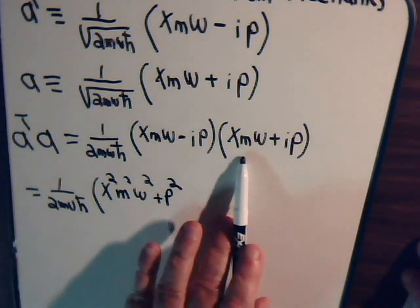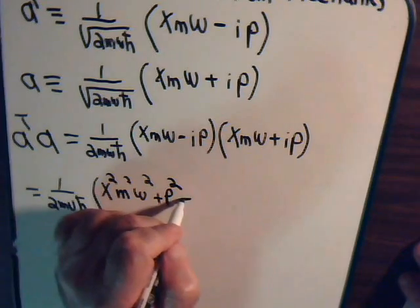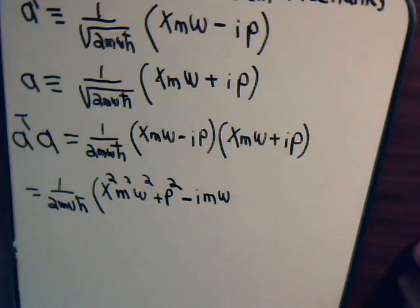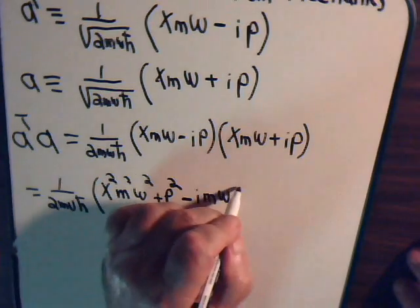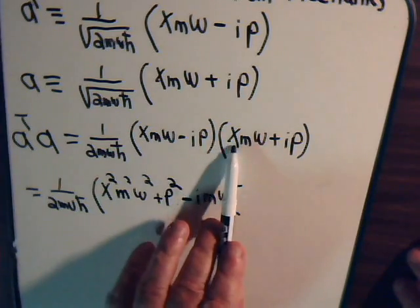Now, for the cross terms, here we have this times this. So, we have im omega with a minus sign here.